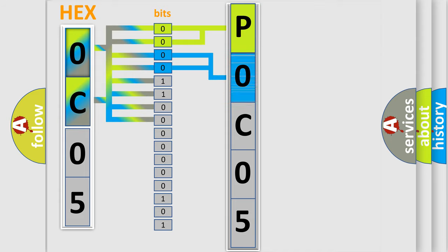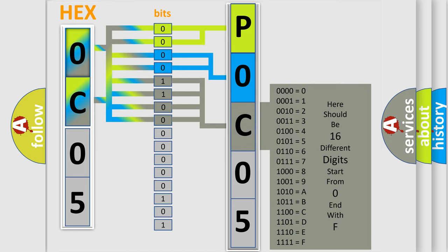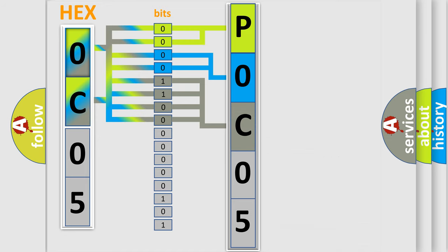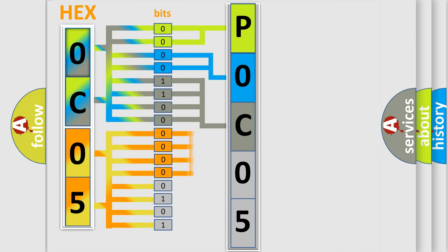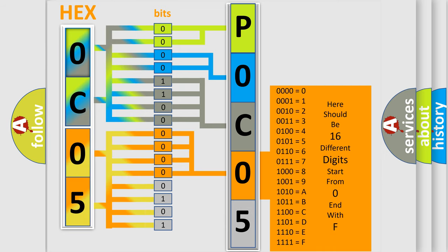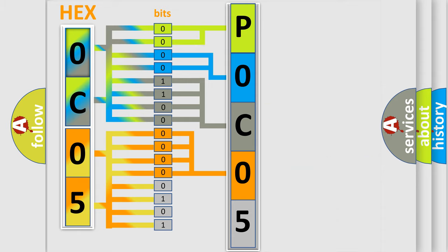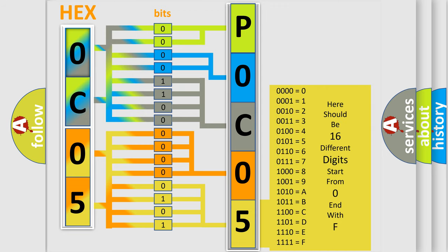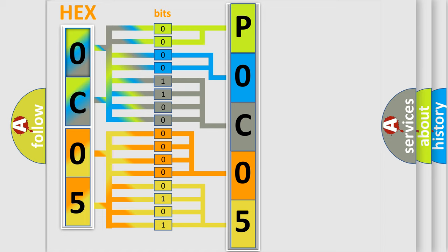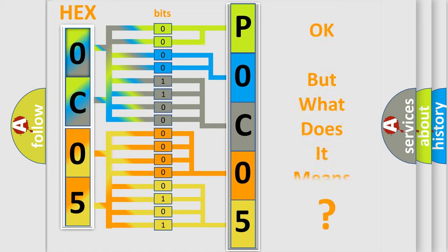The next two bits again determine the second character. The last bits of the first byte define the third character of the code. The second byte is composed of a combination of eight bits. The first four bits determine the fourth character of the code, and the combination of the last four bits defines the fifth character. A single byte conceals 256 possible combinations. We now know in what way the diagnostic tool translates the received information into a more comprehensible format.